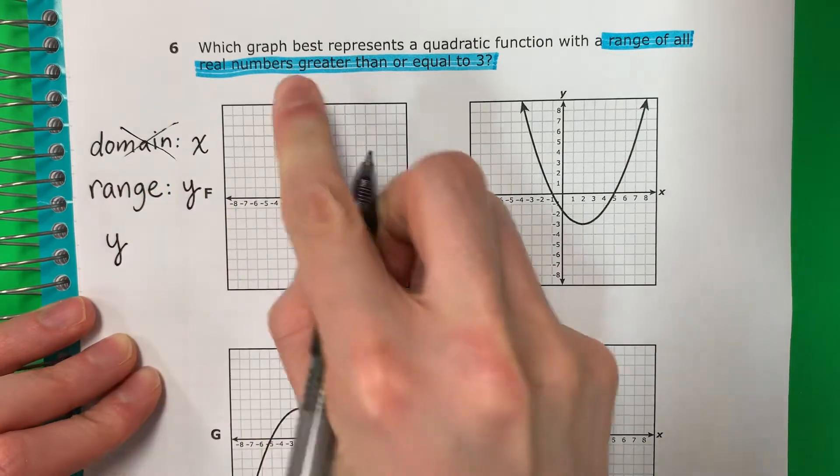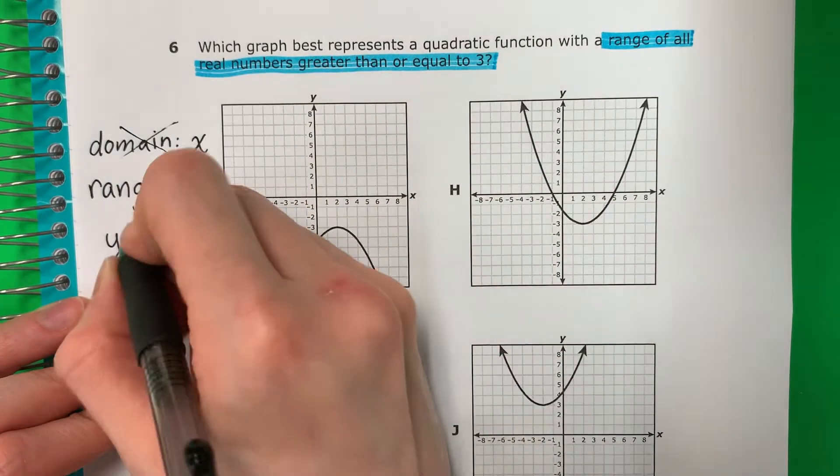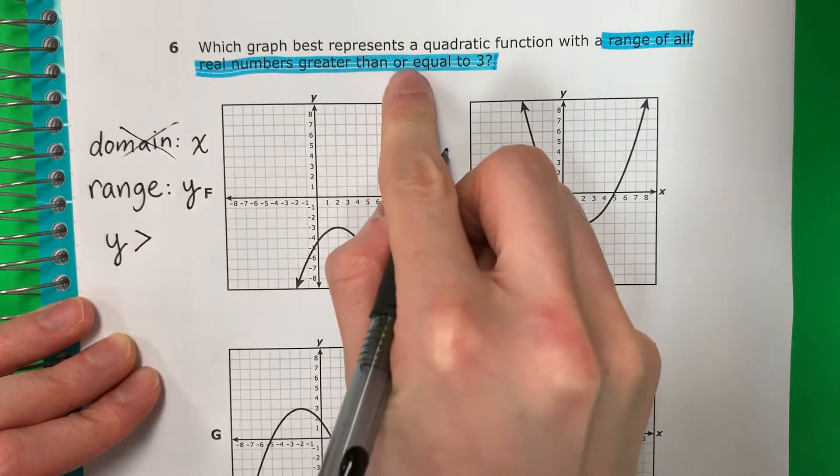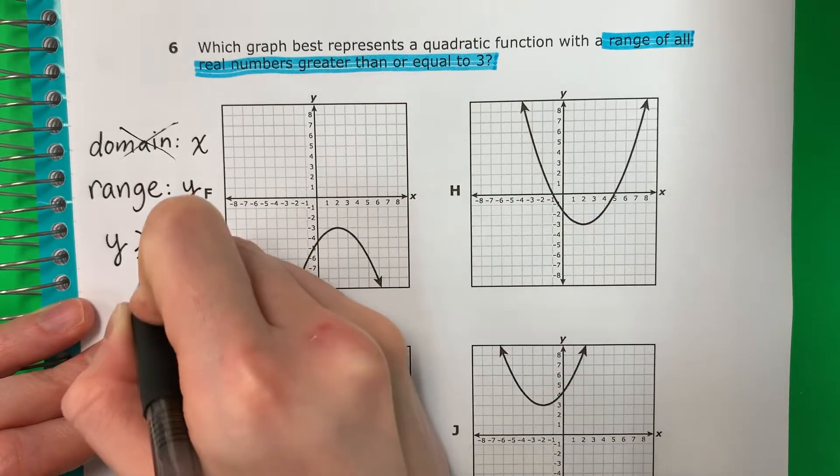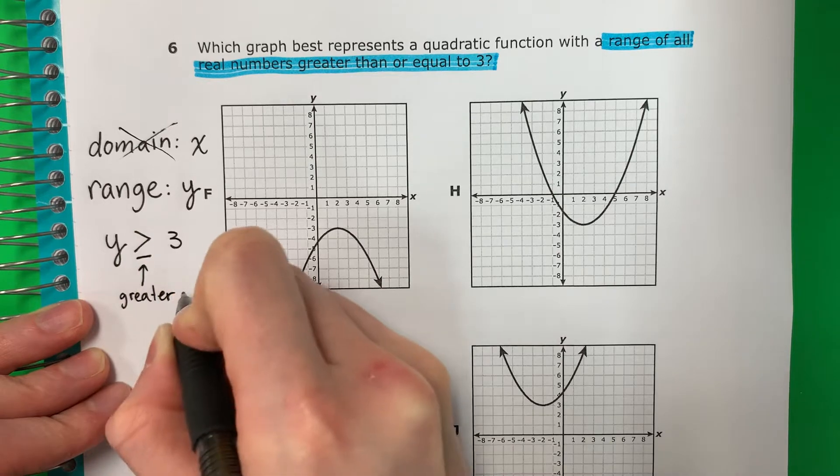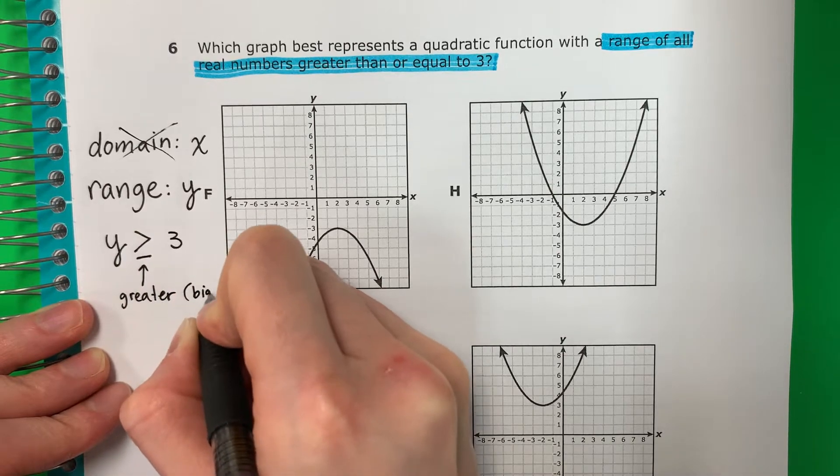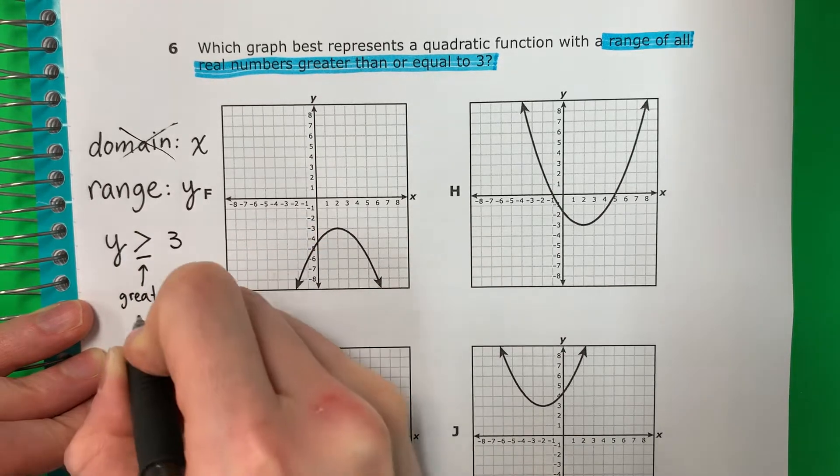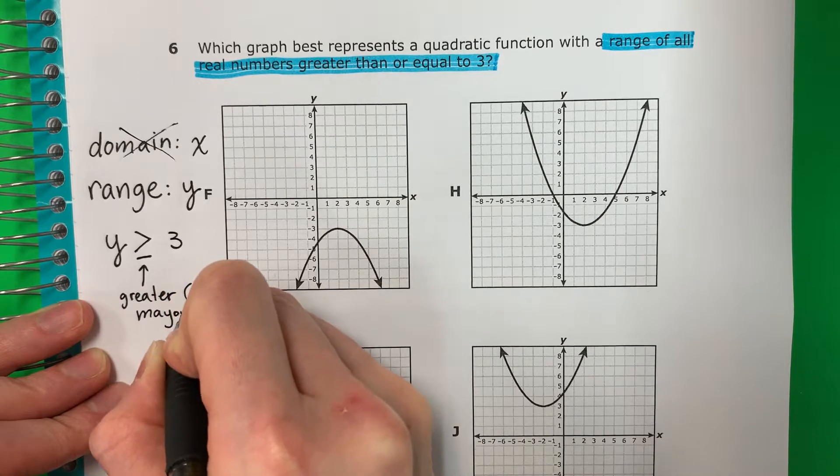And they said greater than, mayor que, greater than or equal to 3. This is greater, which is bigger, or in Spanish, mayor que.